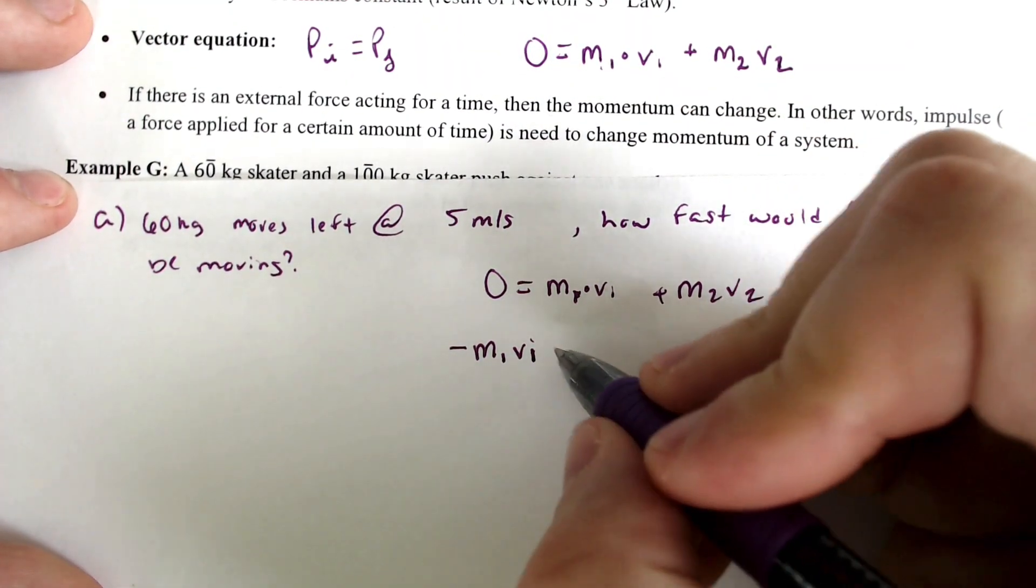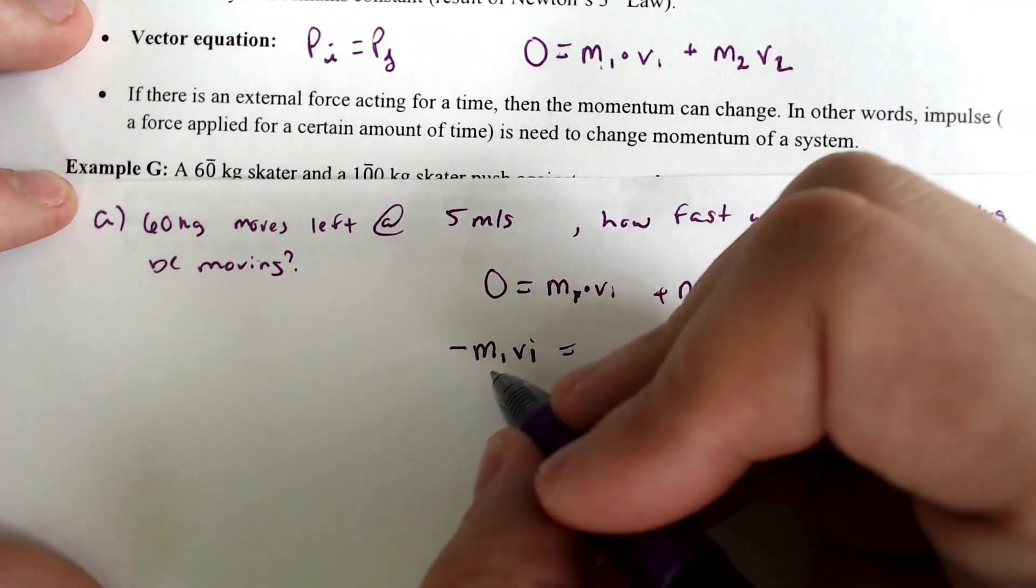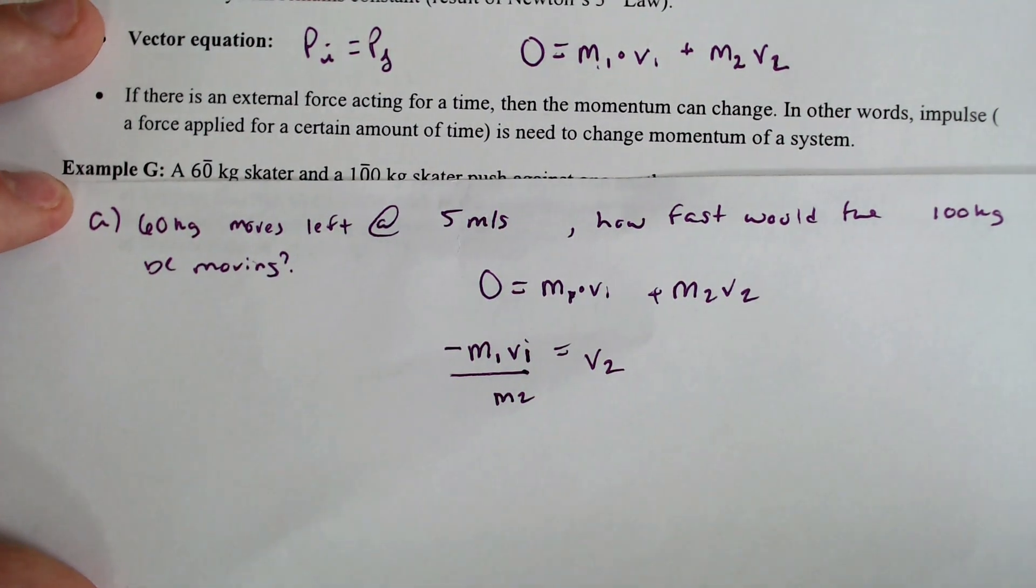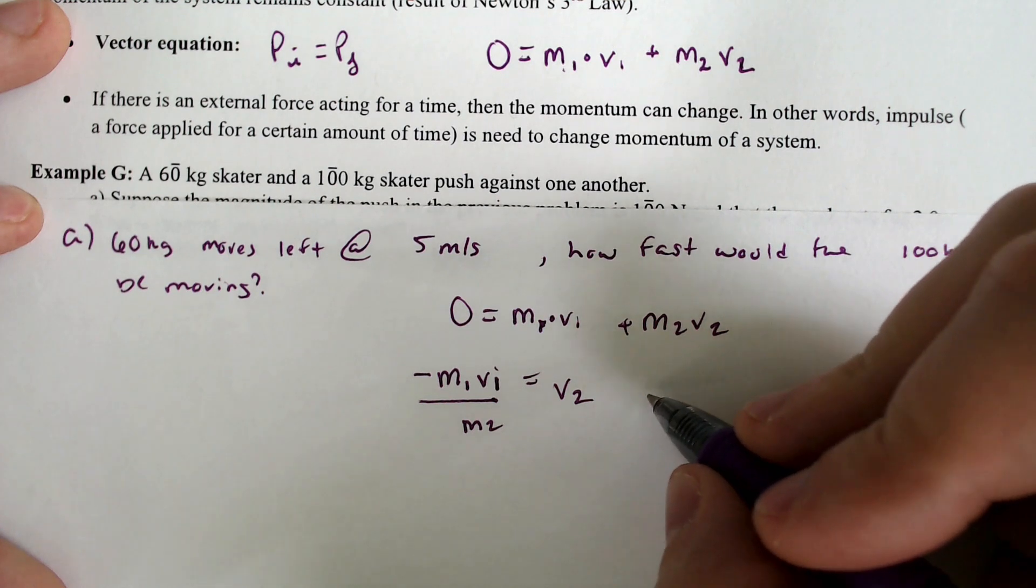So I'm going to subtract the mass of M1 and V1 over, and I would end up dividing by the mass of M2, and that would give me the volume of skater two, the 100-kilogram skater. So let's plug in our stuff.